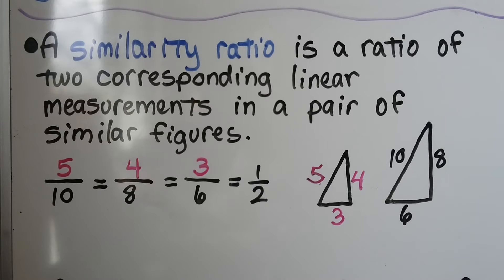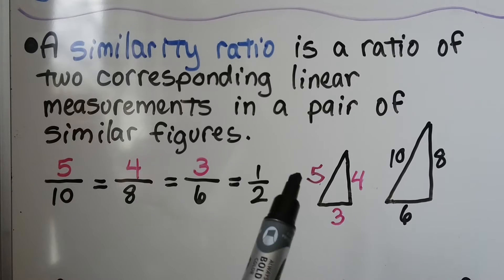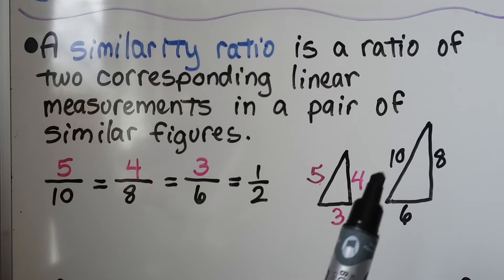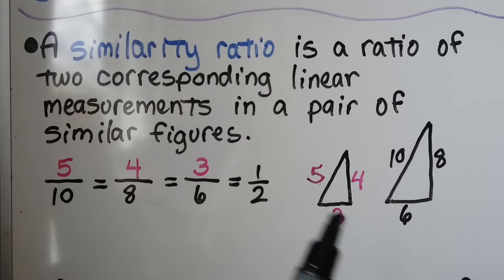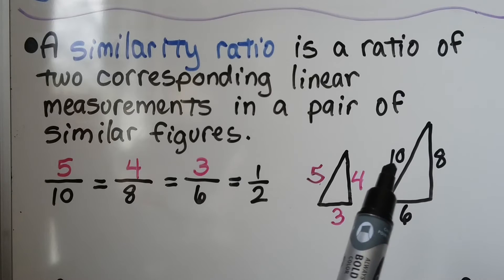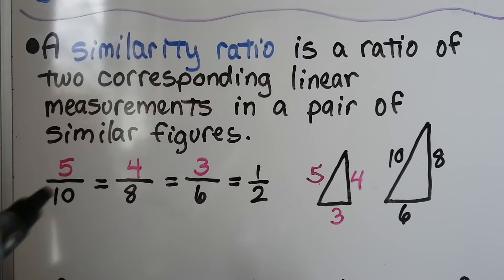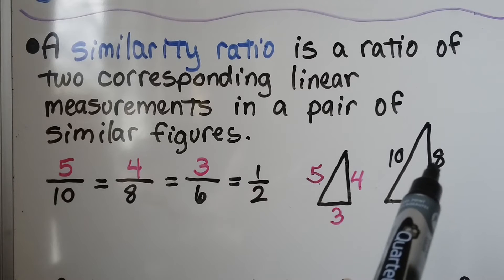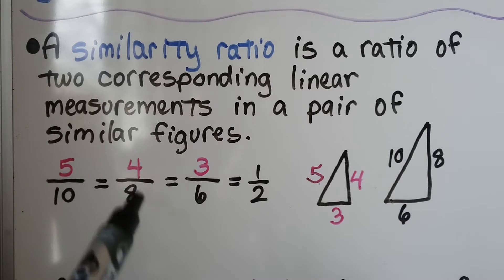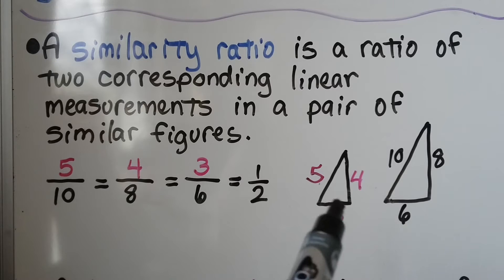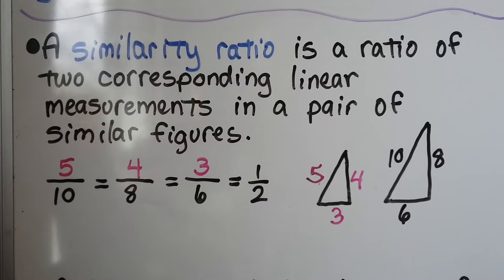A similarity ratio is a ratio of two corresponding linear measurements in a pair of similar figures. Here we have two similar triangles: one with sides 5, 4, and 3, and another with sides 10, 8, and 6. Taking 5 over 10 gives one half. 4 over 8 is also one half, and 3 over 6 is one half. So the similarity ratio for these two triangles is one half.